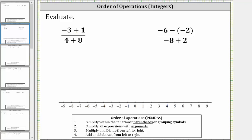So if it's helpful, we can think of having parentheses around the numerator and the denominator. Simplifying in the numerator, negative three plus one is equal to negative two.